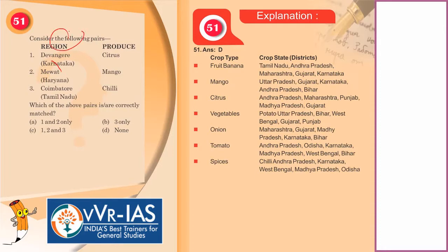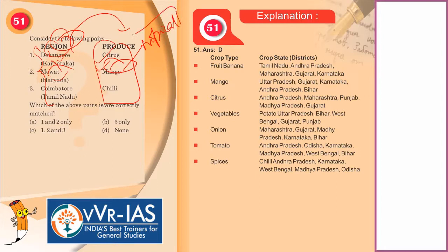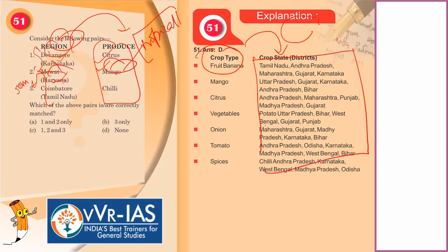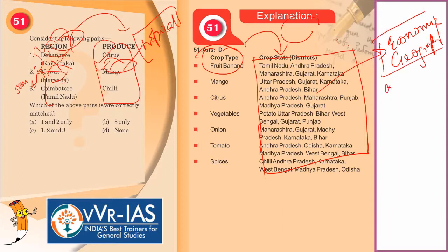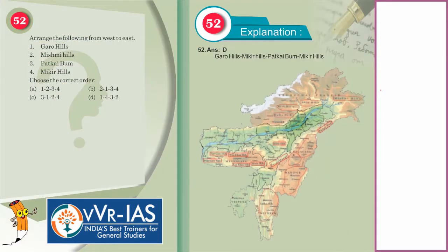The 51st question provides pairs of regions and what they are famous for producing — citrus fruits with Devangiri and Karnataka, mango with Mewat and Haryana. Mango is basically a tropical fruit, and Haryana is in a temperate or semi-temperate region, so the second option is clearly wrong. This is based on economic geography — you should be familiar with the major producers of India. Since horticulture and agriculture are prominently featured now, such questions can figure in your prelims, so you should be broadly aware of which region produces what.